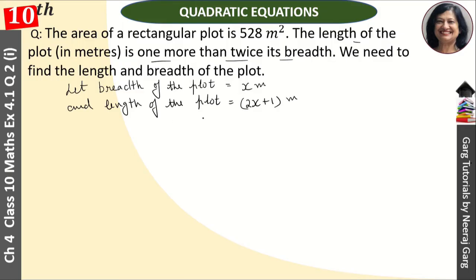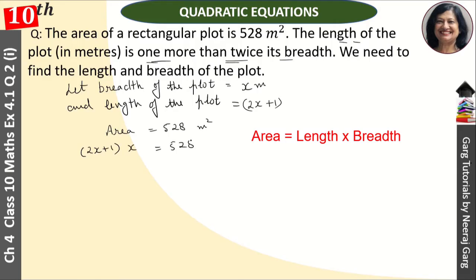We are given the area. Area is equal to 528 square meters. Area equals length times breadth. So, length is 2x plus 1, and breadth is x. That is equal to 528.